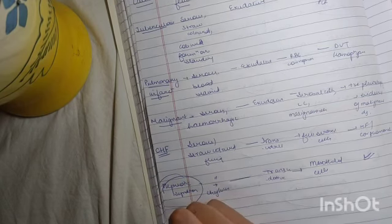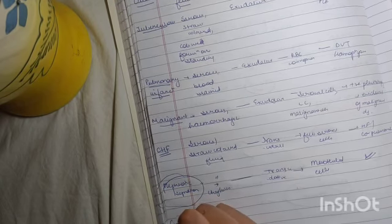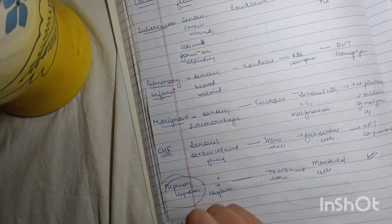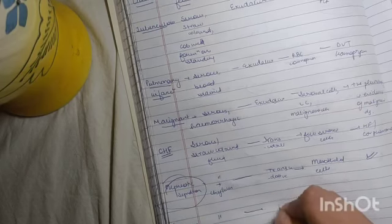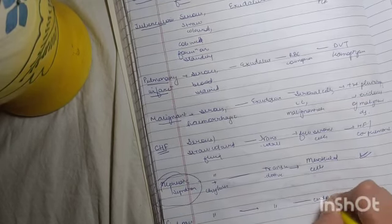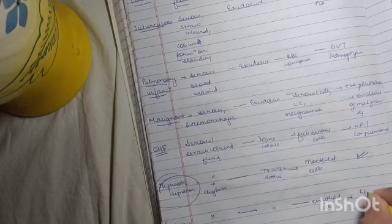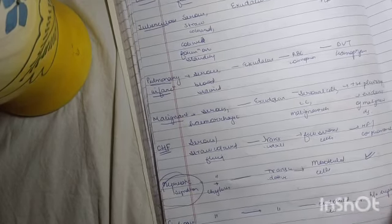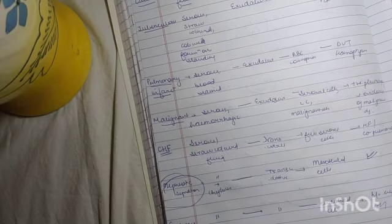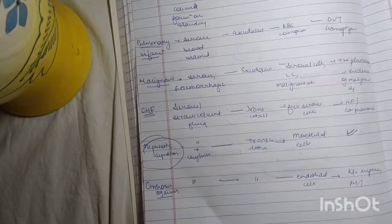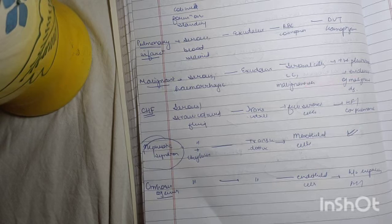Then cirrhosis of liver. Similarly same, mesothelial cells. Here there has to be history of hepatitis. Also portal hypertension features like engorged veins, caput medusae, splenomegaly, edema, everything.